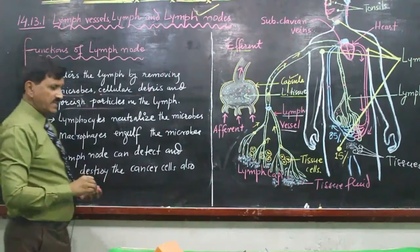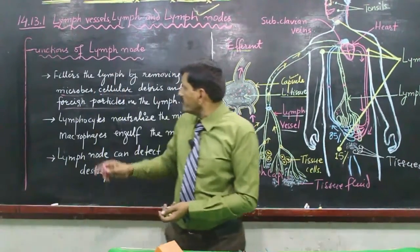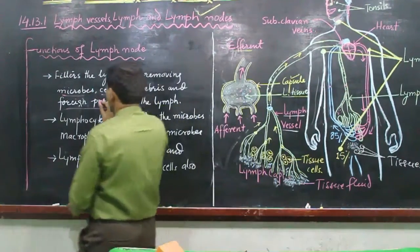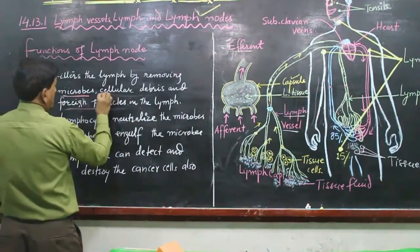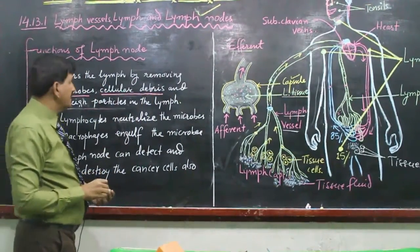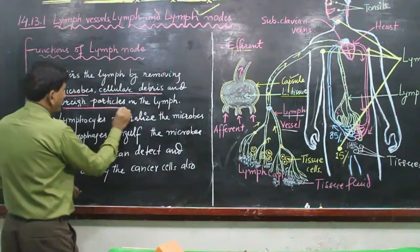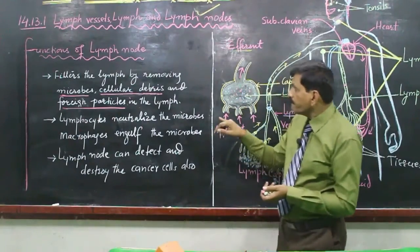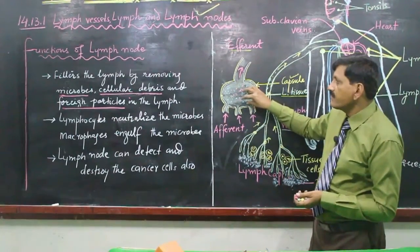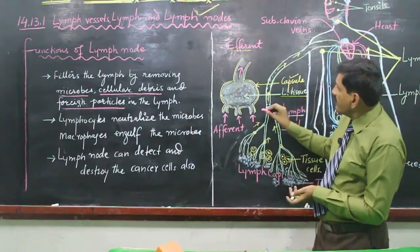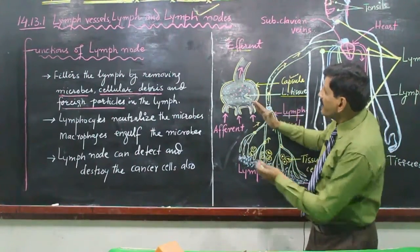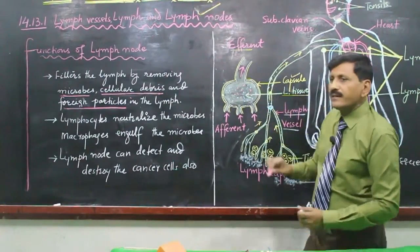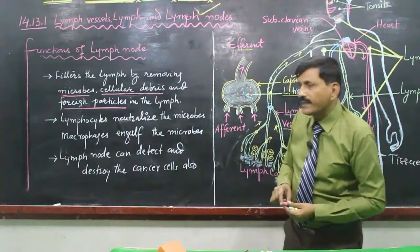Functions of lymph nodes: The first function is that the lymph node filters the lymph by removing microbes, cellular debris — that is, pieces of the cell — and foreign particles. Microorganisms and foreign particles pass through the node.